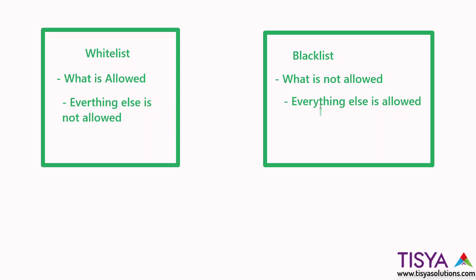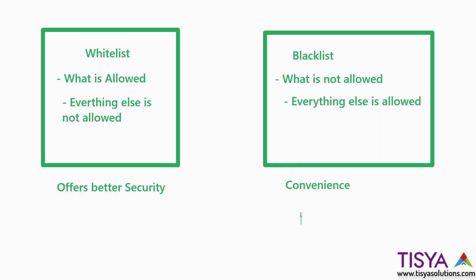Depending on what firewall you are implementing and what options it provides, you can choose whitelist or blacklist. Keep in mind that whitelist offers better security because you explicitly tell what is allowed and the rest is all not allowed. Whereas blacklist gives you more convenience because you don't need to list hundreds of things you want to allow — you only stop what is not allowed and the remaining are all allowed. Similar to how when you're traveling on a road, nobody checks who you are; people are generally allowed to walk through. Whereas if you're entering a building, they might use a whitelist rule to tell who is allowed.